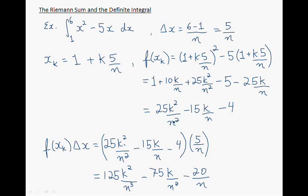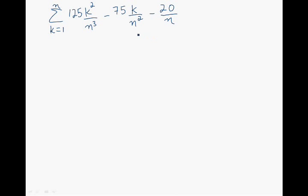The next step is to add up the areas for rectangles beginning at 1 and going to n. So now this expression gives us the sum of the areas of the rectangles for k equal to 1, going all the way to k equal to n.